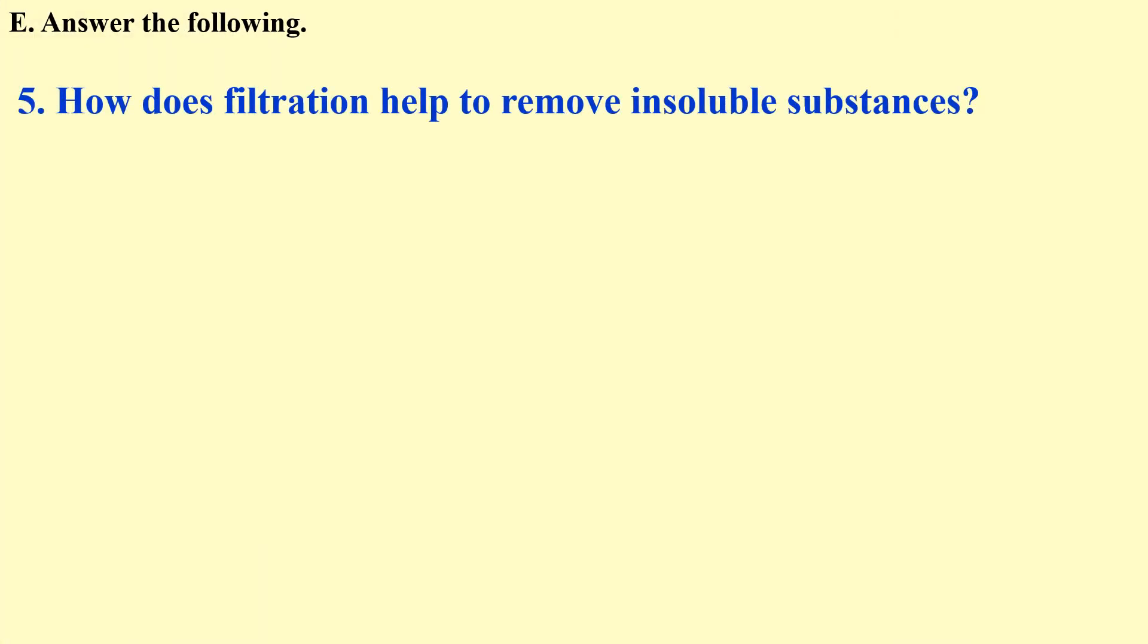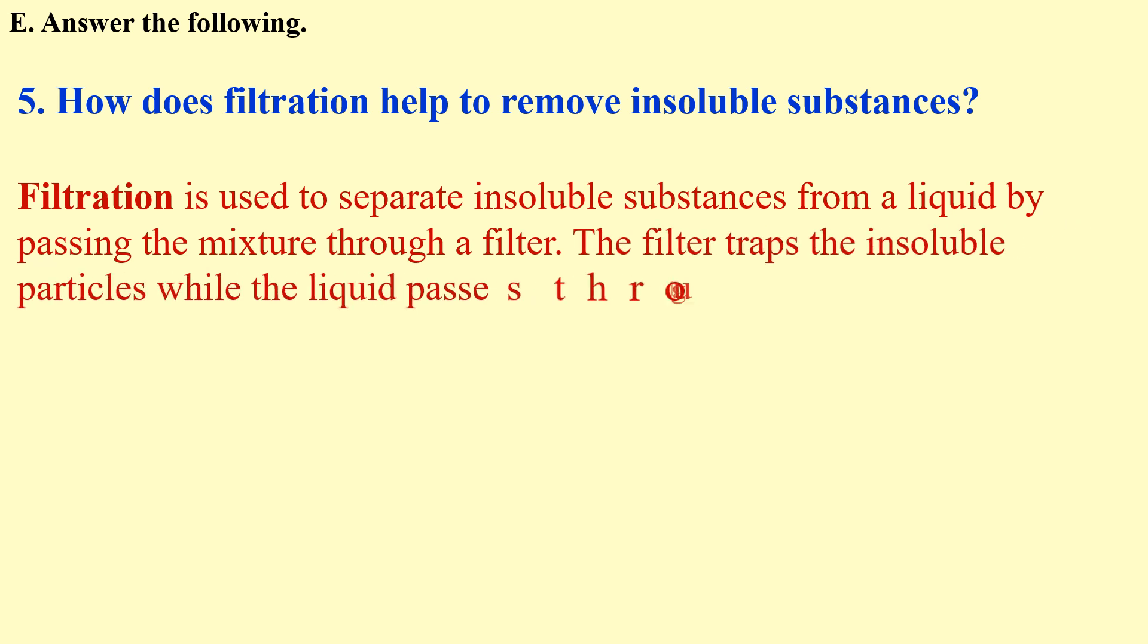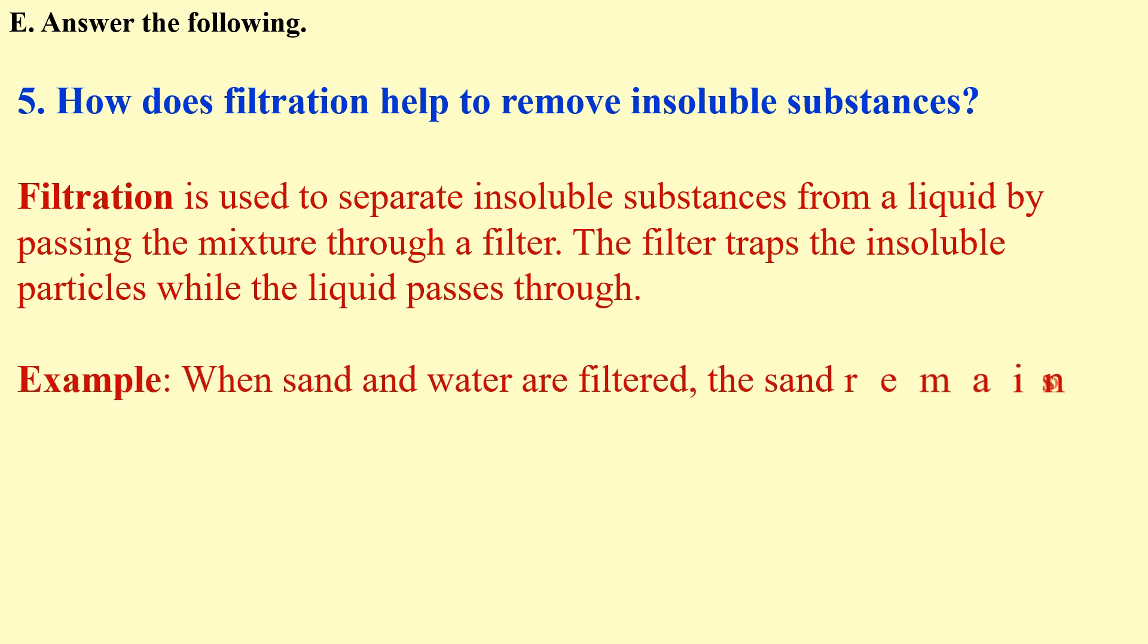How does filtration help to remove insoluble substances? Filtration separates insoluble substances from a liquid by passing the mixture through a filter paper. The filter traps the insoluble particles, while the liquid passes through. Example: When sand and water are filtered, the sand remains on the filter paper, and clean water passes through.